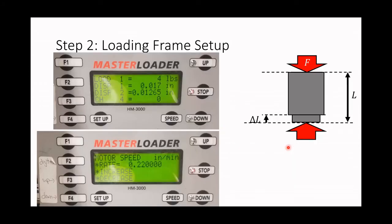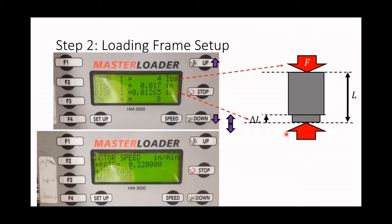To set the sample, we have to check the parameters used to handle the frame. When we operate the frame, we are moving the lower part. Based on that, we measure two main parameters: Channel one, which is the load we are applying in terms of force, and Channel three, which is the displacement — indicating the vertical displacement of the sample. We can choose to move the lower part either up or down to increase or decrease the force applied over the sample.